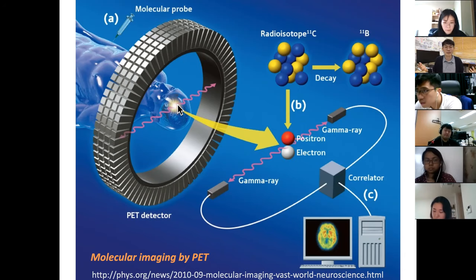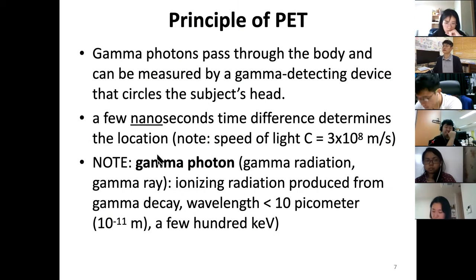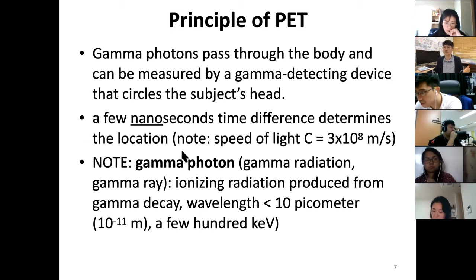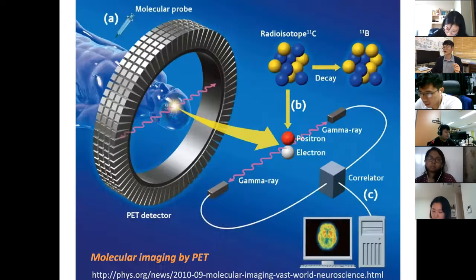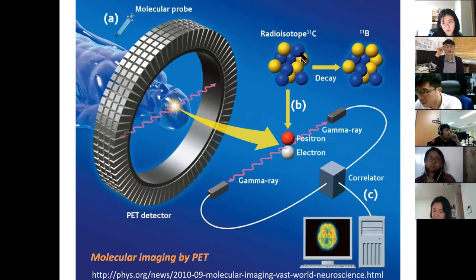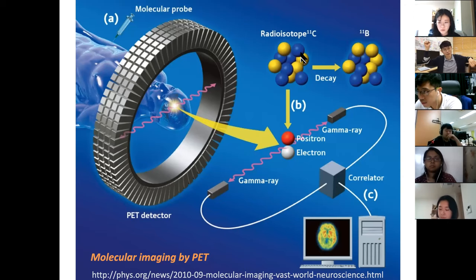For picosecond-level timing we cannot rely on electronics alone and need physical tricks. Gamma radiation — also called gamma rays — is ionizing radiation from gamma decay, with wavelengths less than 10 picometers and energies of hundreds of keV. In PET imaging, each annihilation event produces two gamma photons, each at 511 keV, emitted in opposite directions.